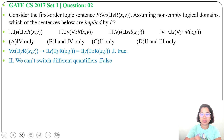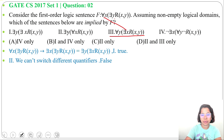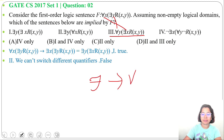Next, statement 3: for all Y, there exist X, R of X, Y. Going from F, we could convert for all X to there exist X, but here there exist Y is being converted to for all Y — meaning existential to universal. From an existential quantifier we cannot imply a universal quantifier.